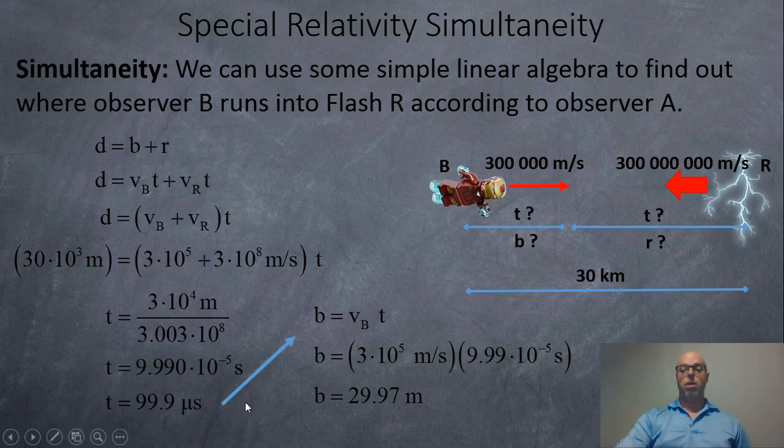At 99.9 microseconds, this person will run into the flash and it'll probably reflect off them. And then the person in the middle, observer A, at 99.9 microseconds, this person got hit by the flash. And so where did that happen? At 29.97 meters. So a little bit to the right.